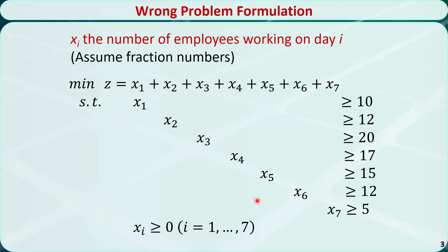Although unrealistic, we assume xi can take fraction numbers, so it will be a linear programming problem. The objective function is the sum of x1 through x7.